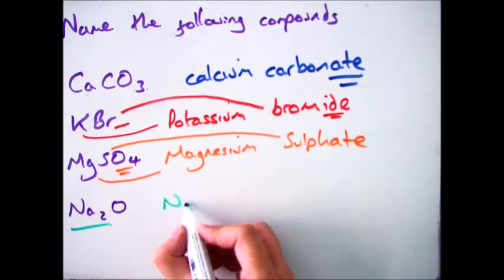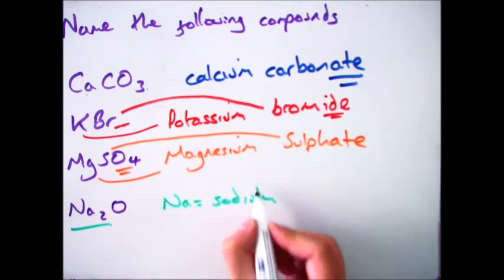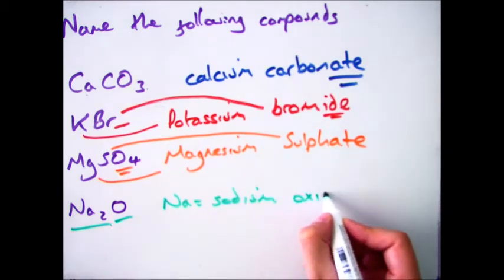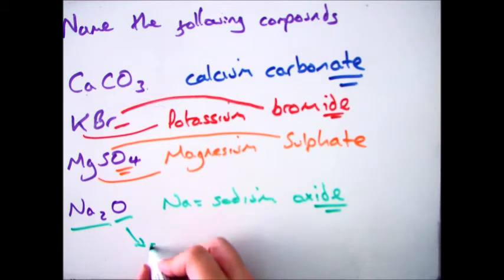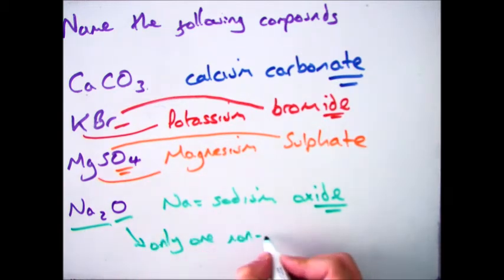Na is sodium. O, oxygen. In this case there's only one nonmetal, so it doesn't matter that it's oxygen, it becomes oxide. So sodium oxide.